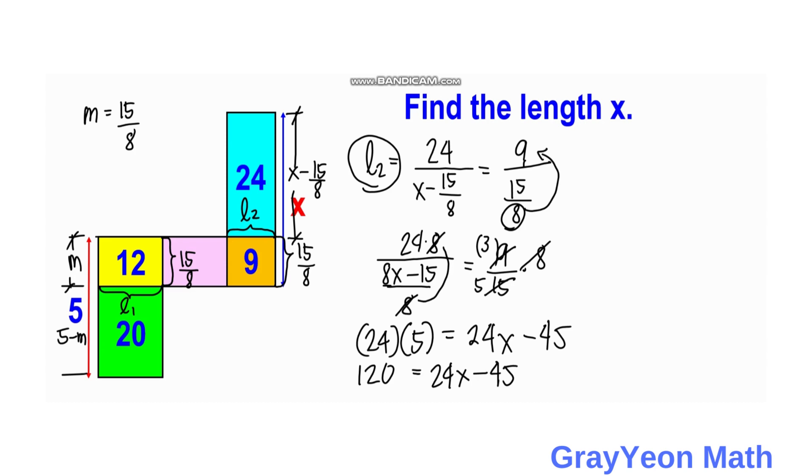So we have here to put this, so 24X, so 24X, so 24X is equal to 120 plus 45, and that will be 165 is equal to 24X.